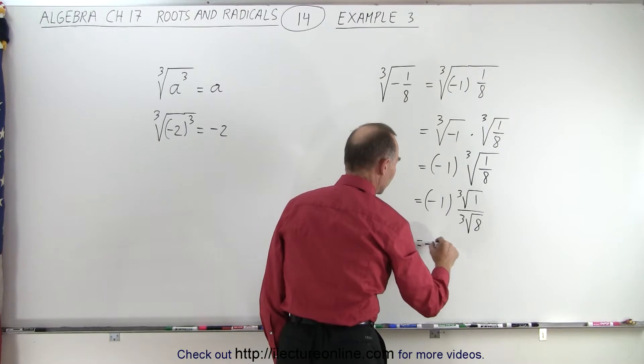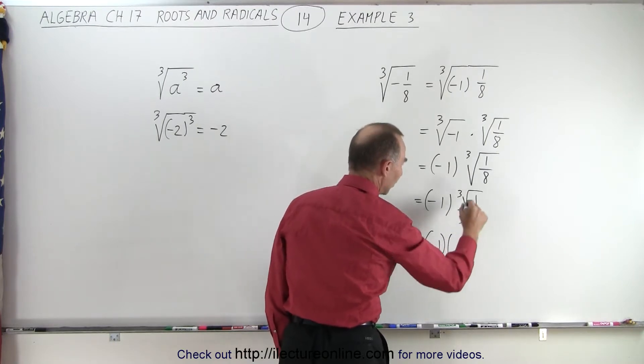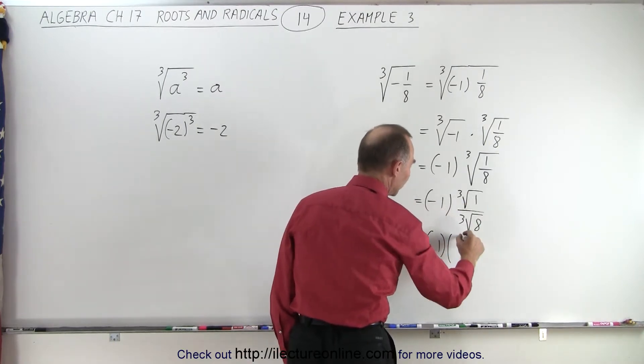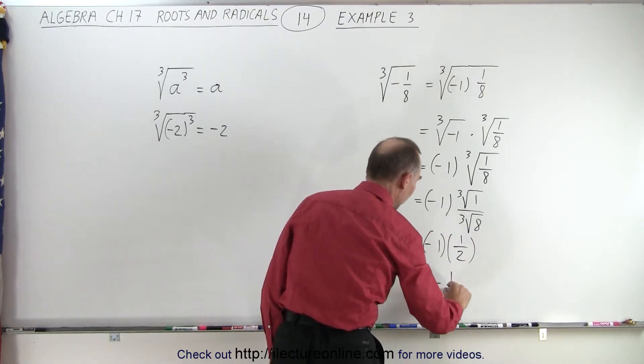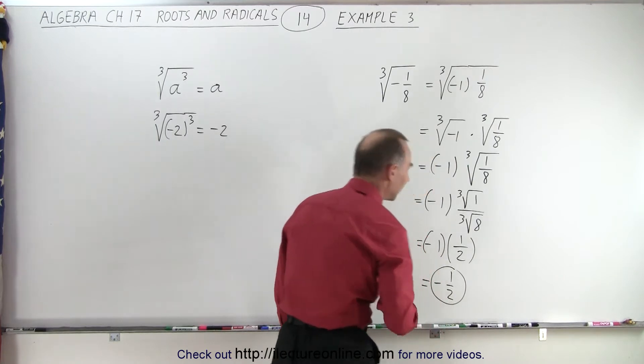And this is therefore equal to negative 1 times—the cube root of 1 is simply equal to 1 and the cube root of 8 is equal to 2. In other words, it's minus 1 half as the final result.